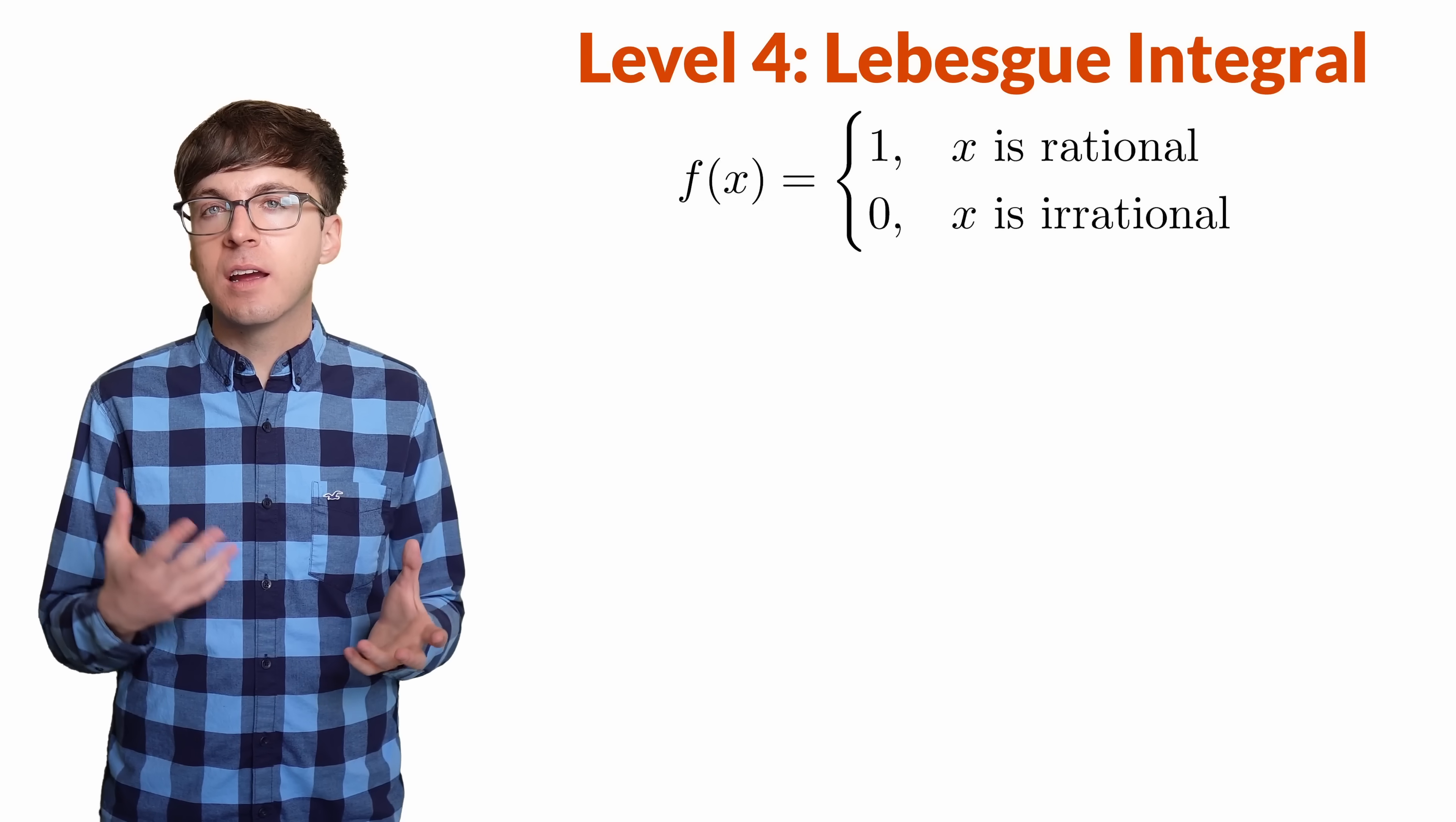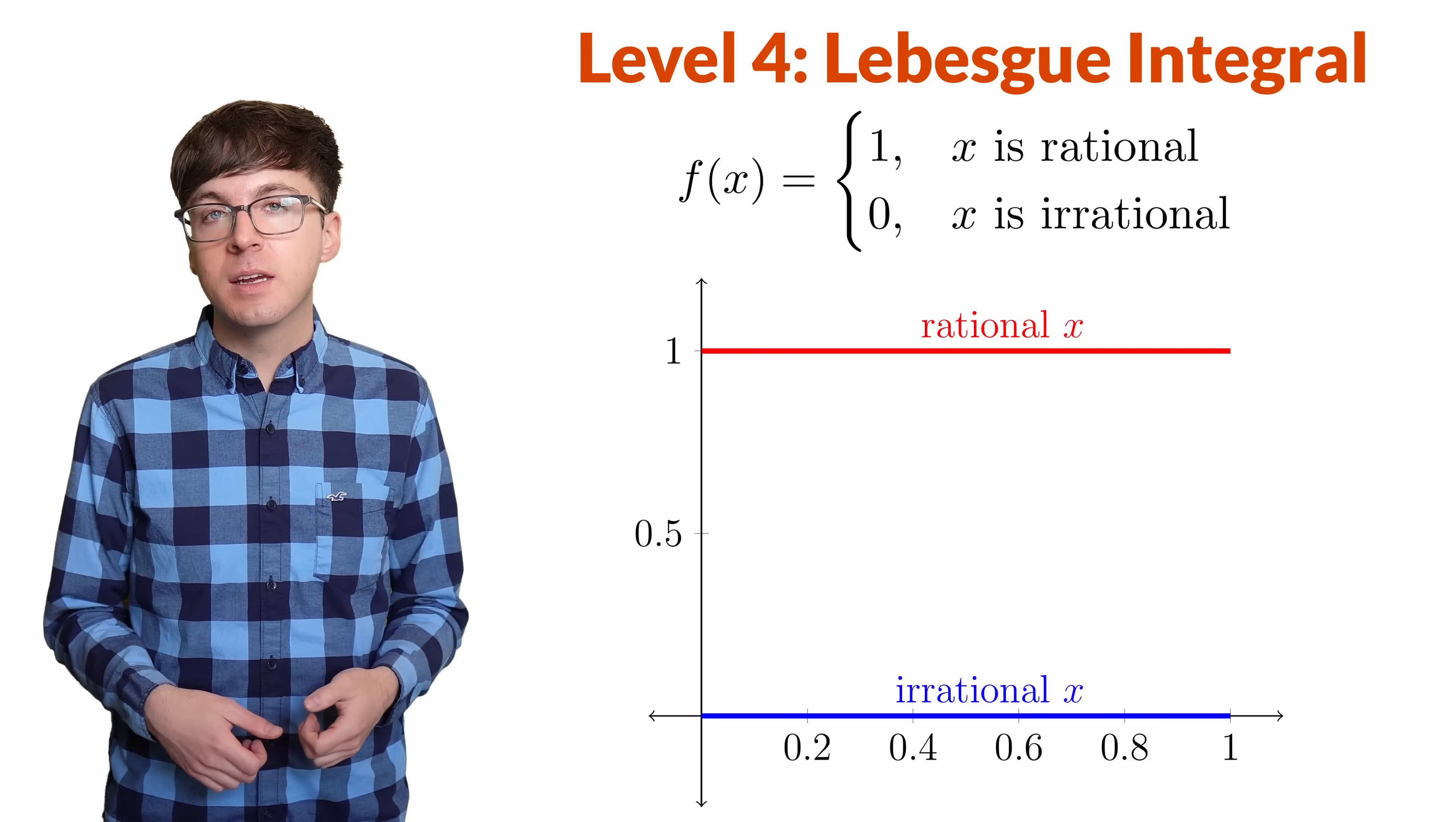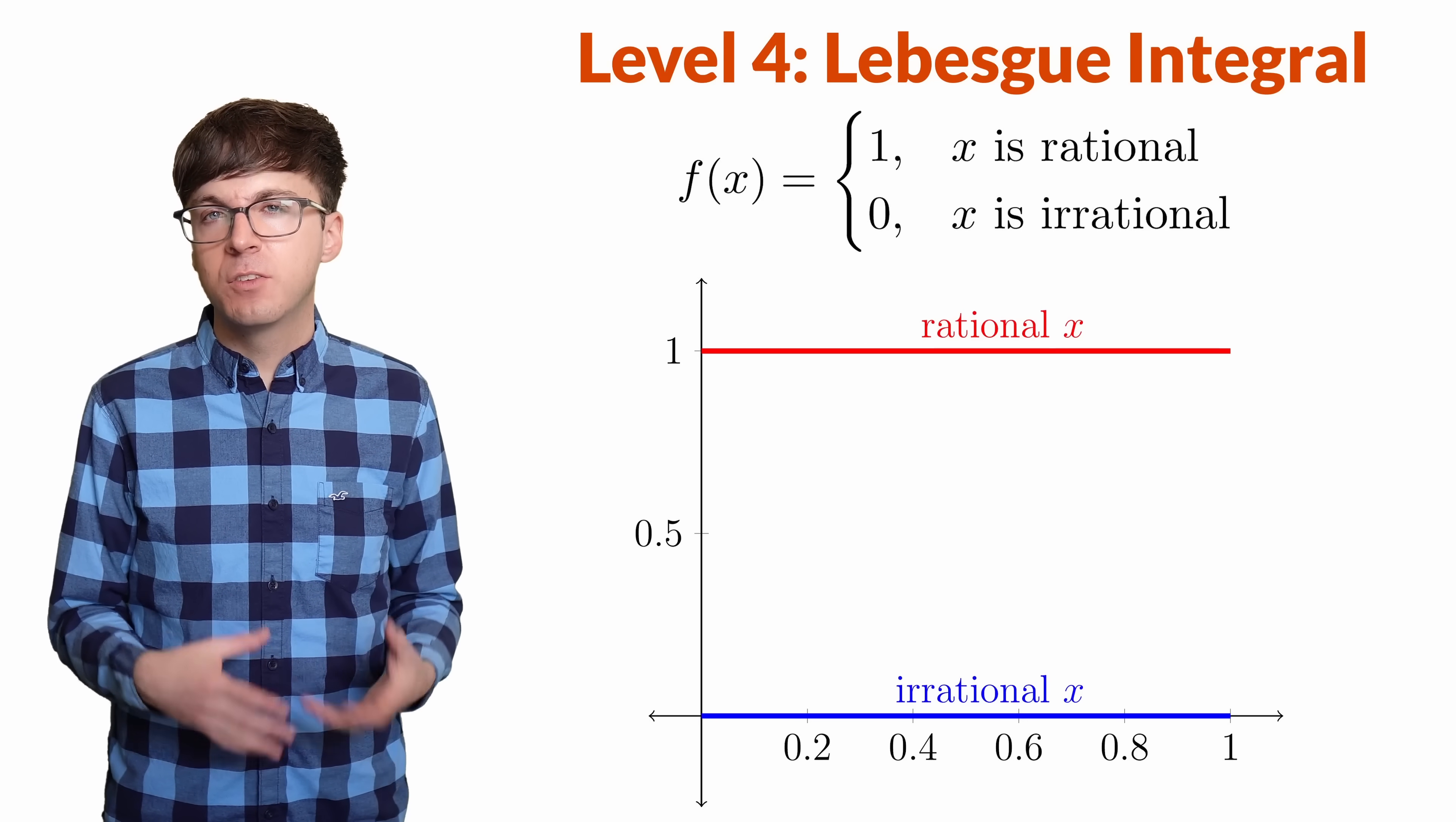Say f(x) equals 1 whenever x is rational, and it's 0 when x is irrational. Let's integrate this function from 0 to 1. This might seem like a bizarre question, but there's actually a practical meaning. This integral tells us the probability that a uniformly chosen random number between 0 and 1 is rational. So can we solve it?